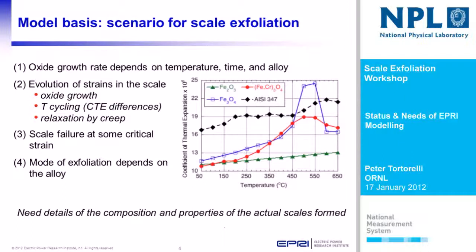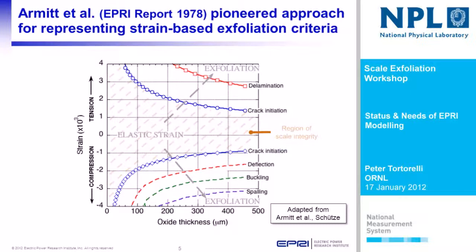We're showing the old data here for Fe3O4. We're taking the same approach first put forward by the infamous 1978 report, which pioneered the approach for using a strain-based exfoliation criteria, and in particular for compression failures using a strain energy criteria for predicting exfoliation. You'll see we've modified the original Almet diagram, where if you stay in the region of elastic strain as shown by the dashed lines, you're in a safe condition, but as soon as you exceed these criteria — whether in tension or compression — you start going into scale failure modes and ultimately into exfoliation.